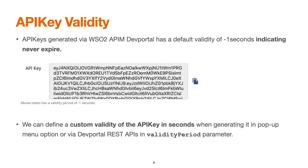It is important to set the appropriate validity for the API key, especially if you plan to rotate the key after a certain duration. For API keys generated via the developer portal, a pop-up menu lets you define the validity period. The default is minus one, indicating it will never expire, or you can uncheck that option and specify a value in seconds. For keys generated via the developer portal REST APIs, you can define this inside the validity period parameter.